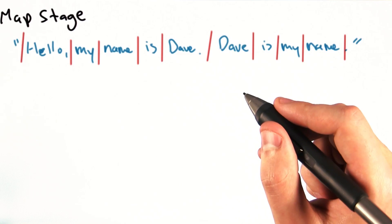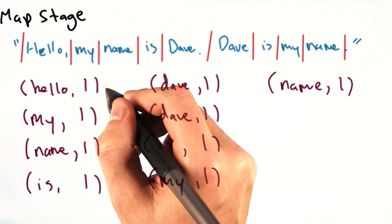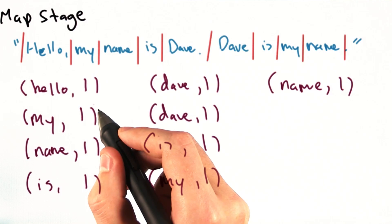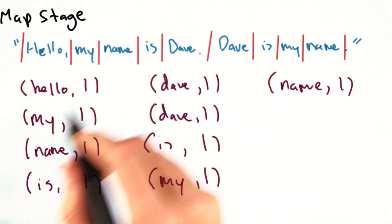The mapper would then emit the following key-value pairs: Hello, one; my, one; name, one; and so on.